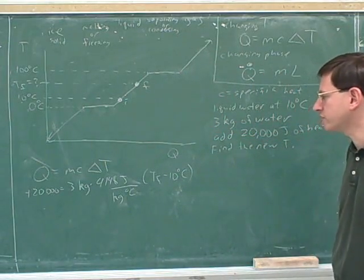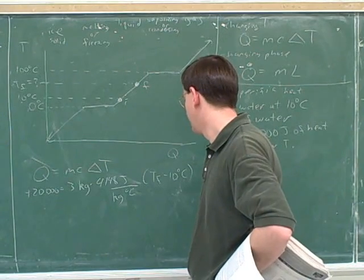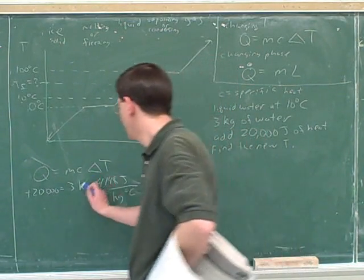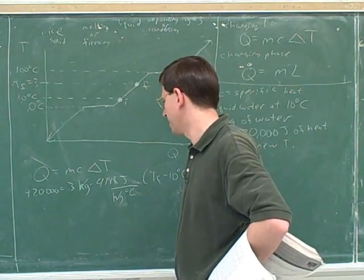All right, so what should we do now? Well, first of all, can you see any units that we can simplify? Kilograms are out. Yeah. And let's just do any calculations we can. So are there any calculations we can do right now? Three times 4184.